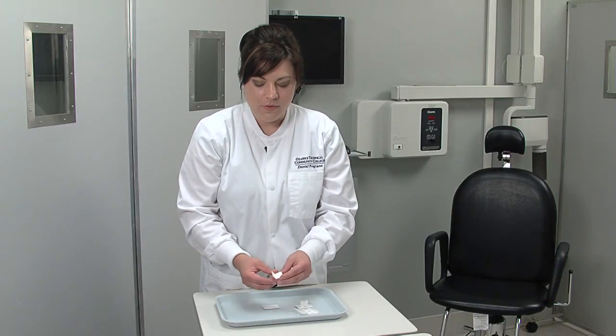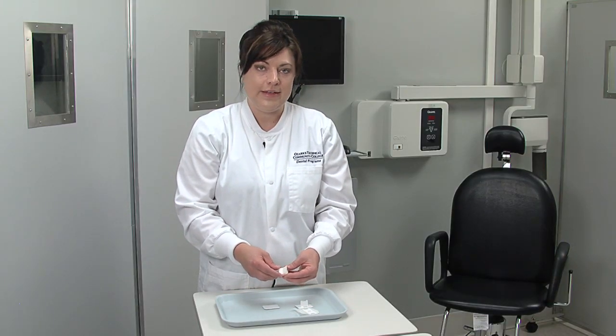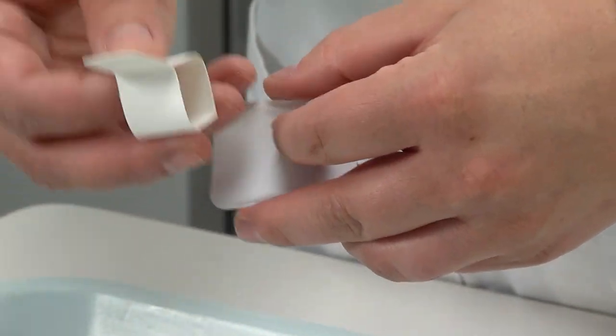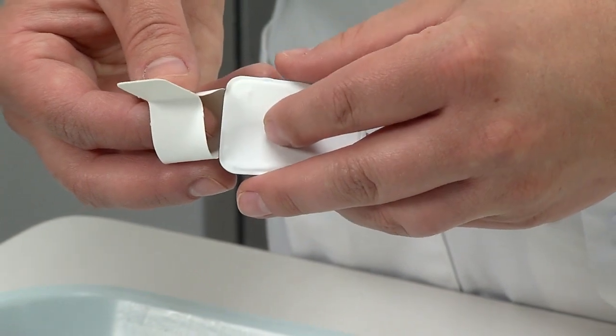The second type of film holder is the bite wing loop, and it does exactly the same thing. It's also made of cardboard, only the difference is that it actually loops around the film rather than sticking to it.